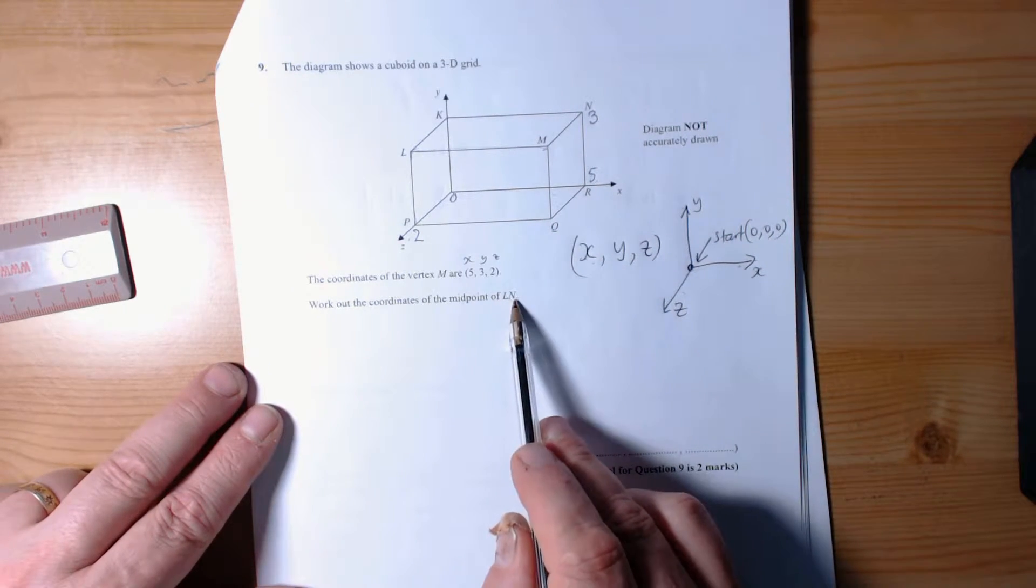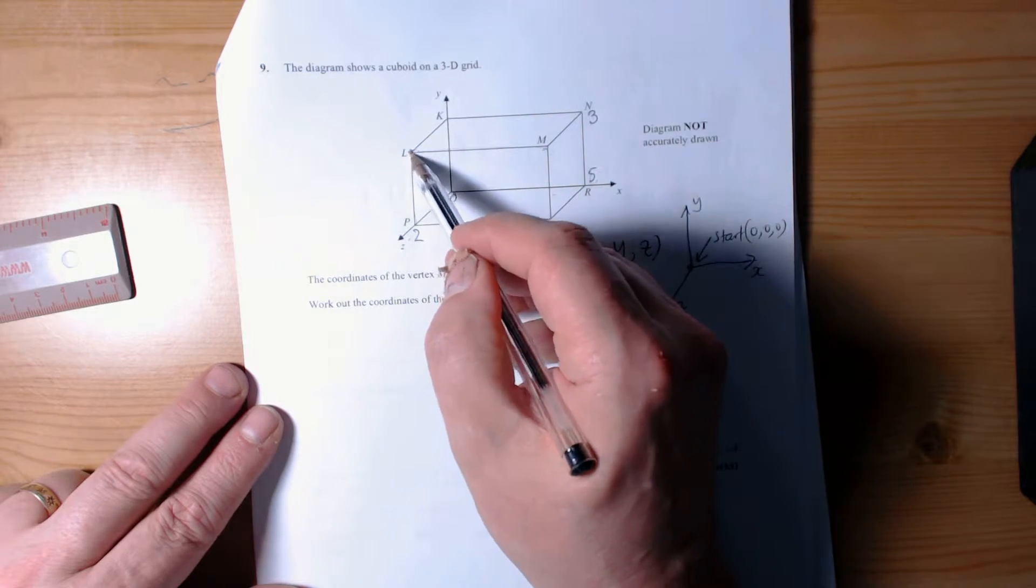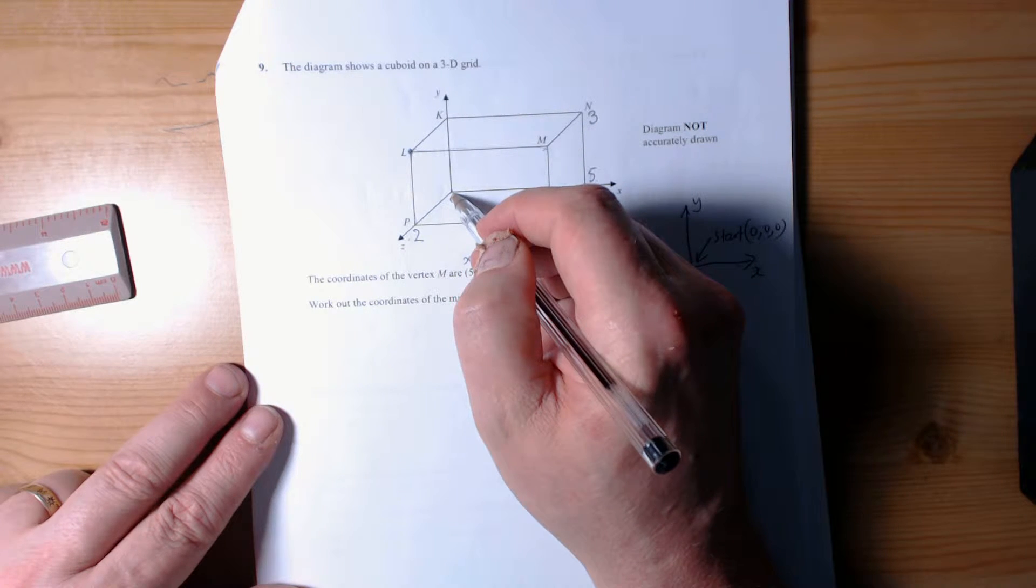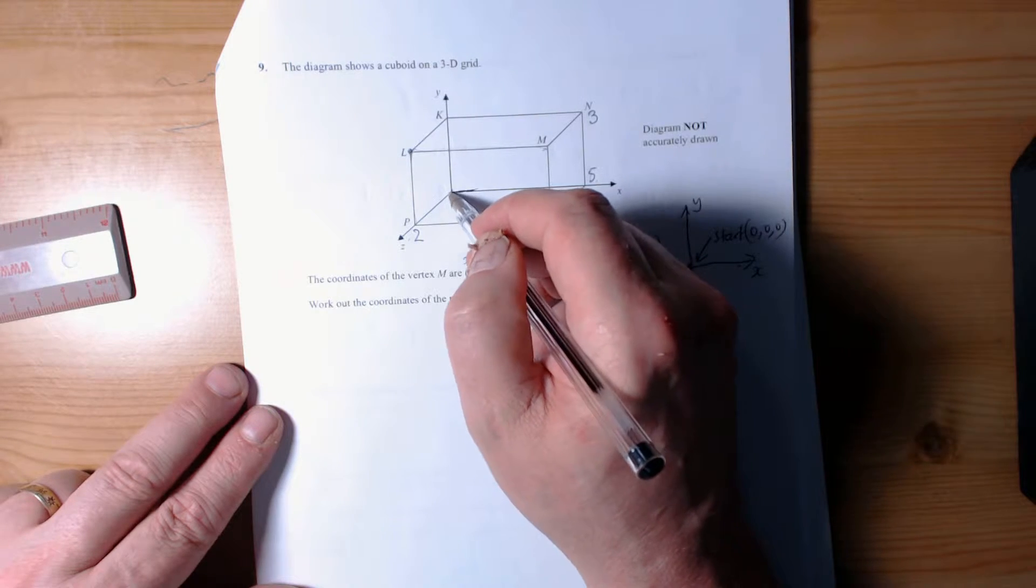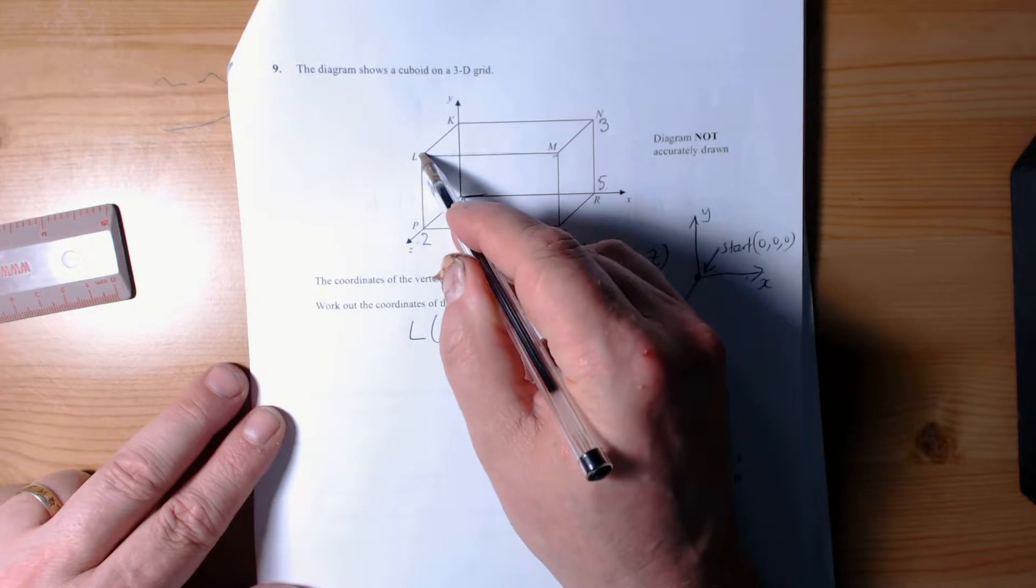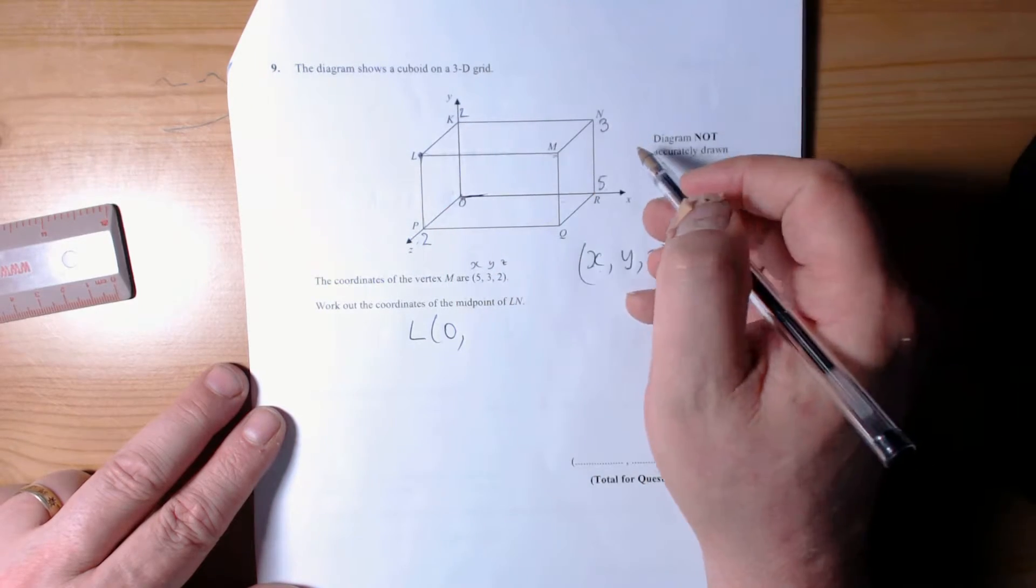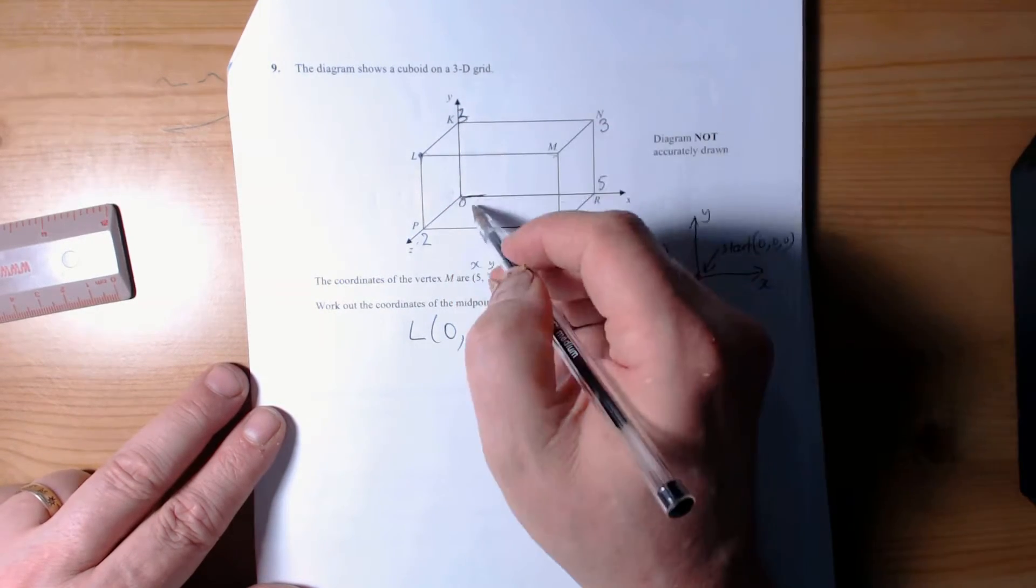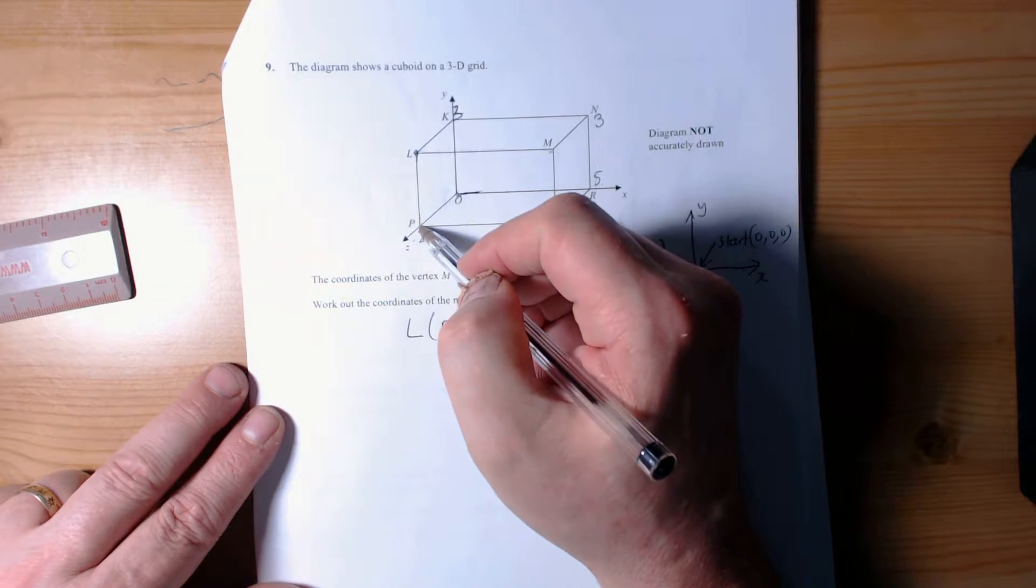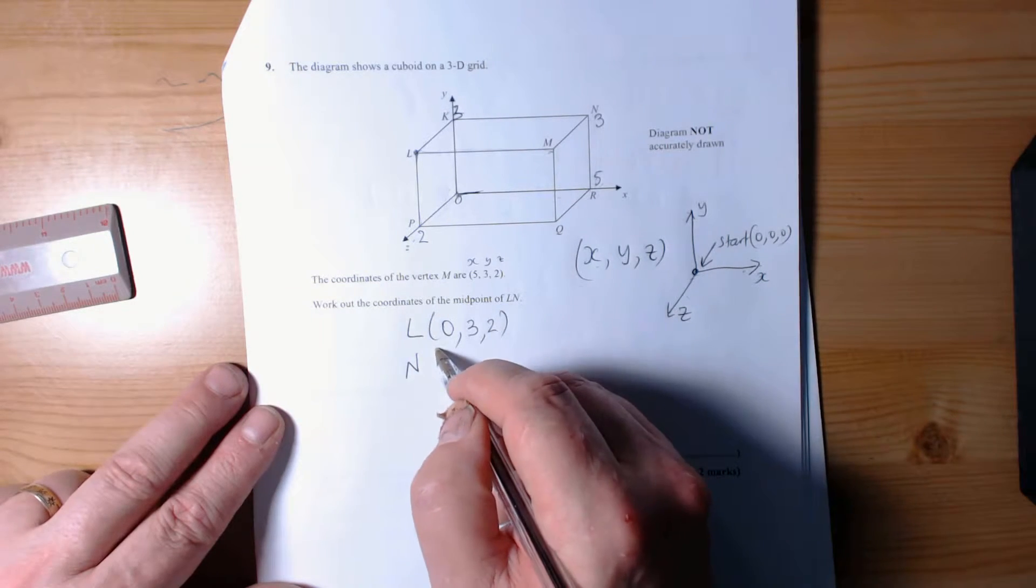It says work out the coordinates of the midpoint of L to N, so we need to know the coordinates of L. To get to L, start at zero. We don't have to move anything in the x direction, so the x-coordinate for L will be 0. It is on the top of the box though, so the y-coordinate is 3. We do then have to come to the front of the box, which has a z-coordinate of 2, so that's the L coordinate (0,3,2).